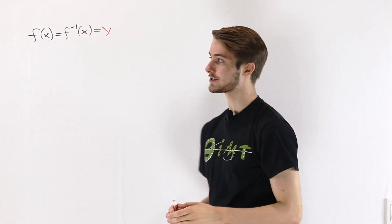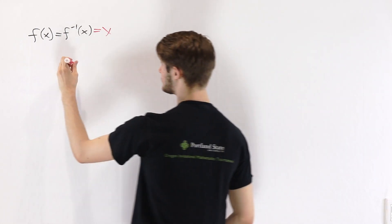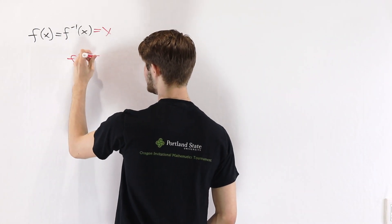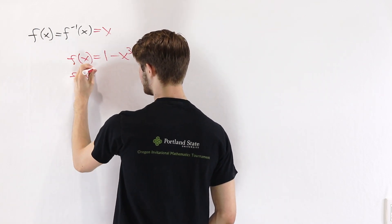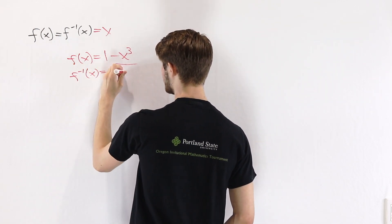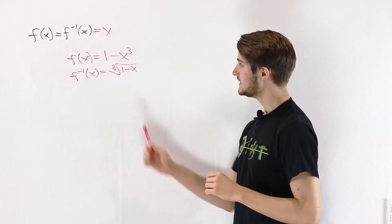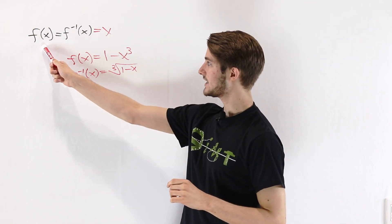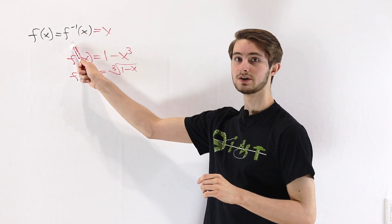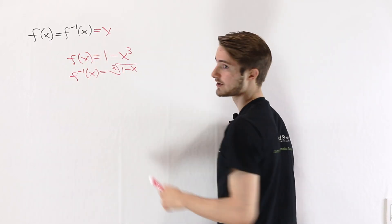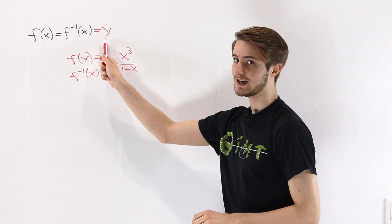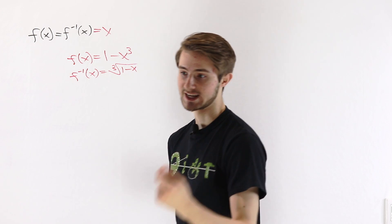One user pointed out that if we take the function f(x) = 1 - x³, the inverse of that function would be the cube root of 1 - x. In this case, when solving f(x) = f⁻¹(x), we actually get five different solutions, but only one of them is a solution where f(x) = x. So it seems like this step doesn't work in every case.